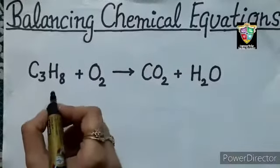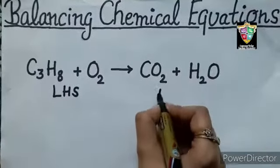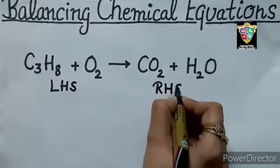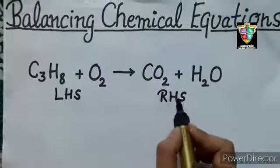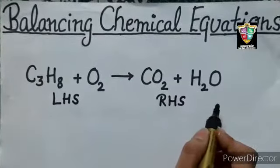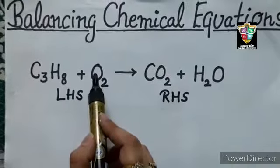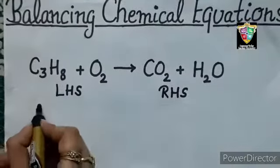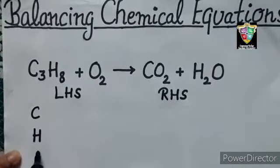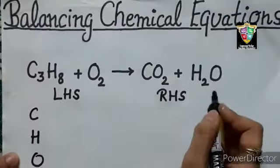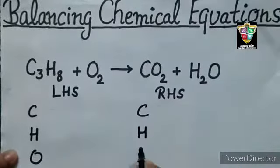First, write LHS and RHS. LHS in the reactants and RHS in the products. Then check which atoms are present like carbon, hydrogen, oxygen. Write carbon, hydrogen, oxygen. Similarly, for RHS also, write carbon, hydrogen and oxygen.